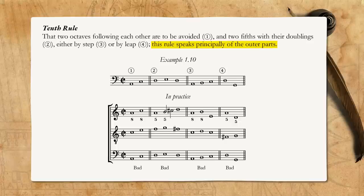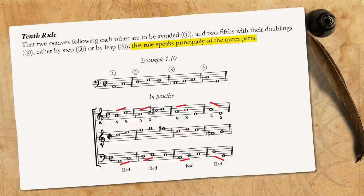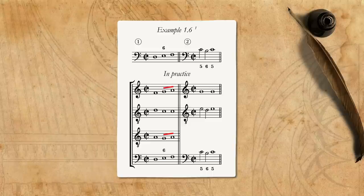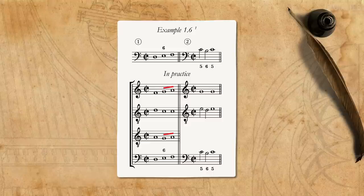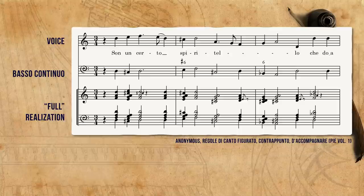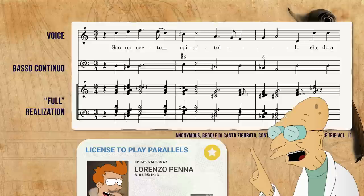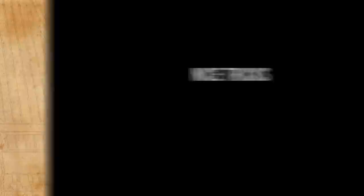Penna's attitude towards parallel intervals might surprise us. He writes rather softly that parallel octaves and fifths are to be avoided, and that this rule speaks principally of the outer parts. He shows an example where parallel octaves and fifths are found between the outer parts and marks it as bad. In some other examples, however, we find parallels involving the inner parts, as in this case between the tenor and soprano. Penna could have easily avoided this, or even corrected it in one of the editions, but it seems like it was really not so important to him. Indeed, when playing full with many notes, the individual movement of the inner voices is very much obscured, to the point that unless the parallels are between the outer voices, they are not evident to the listener. Notice that this license only refers to playing basso continuo — in compositions, all the parts should avoid such parallels.